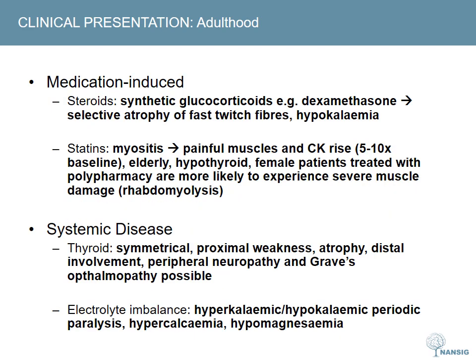Administration of corticosteroids is one of the commonest causes of proximal muscle weakness. Synthetic glucocorticoids such as dexamethasone appear to be a particularly potent causative agent. Biopsy reveals selective atrophy of a subtype of fast twitch fibres. Corticosteroids may also contribute to weakness by causing hypokalemia. Statin myositis is a rare but significant unwanted effect in a small group of patients. Consider lower doses in elderly, hypothyroid, female patients who are taking numerous medications that may affect hepatic metabolism.